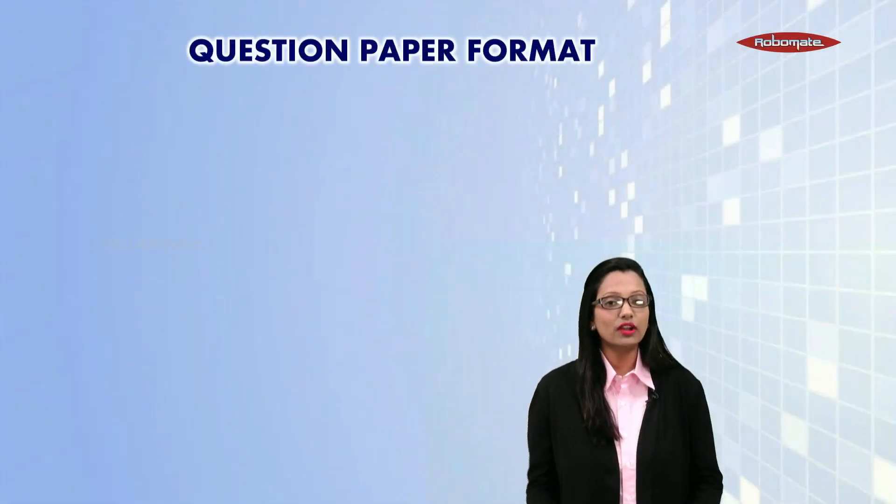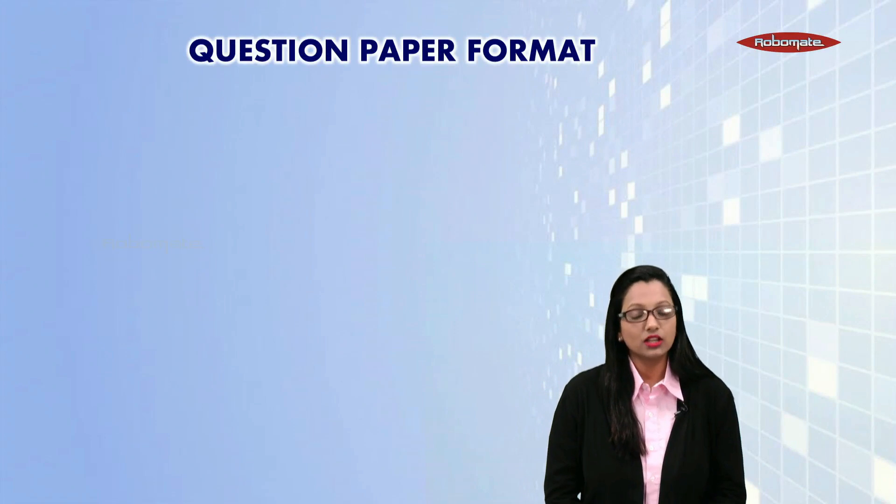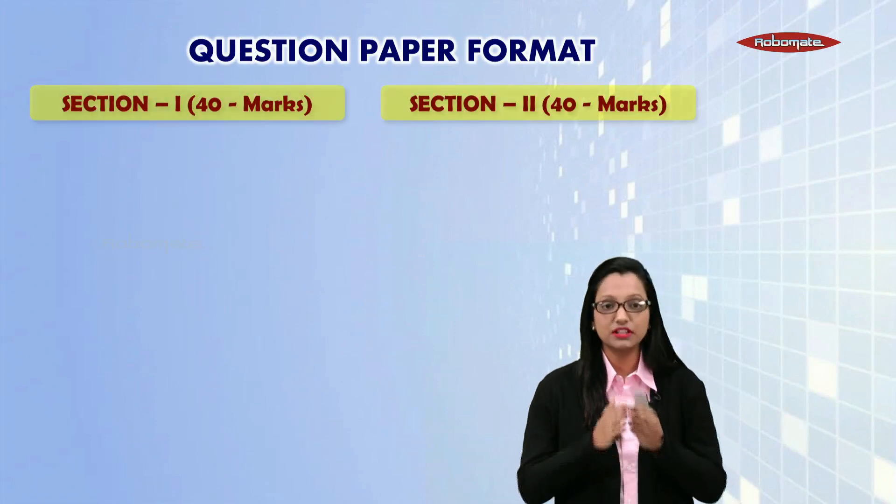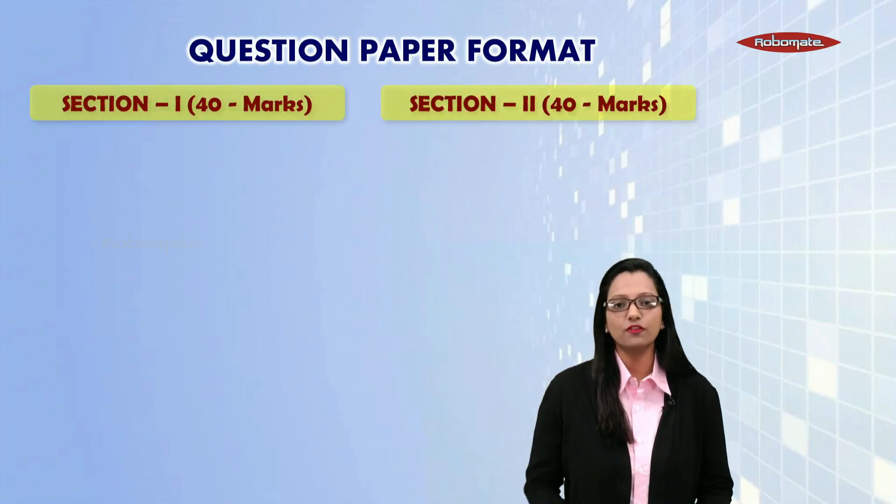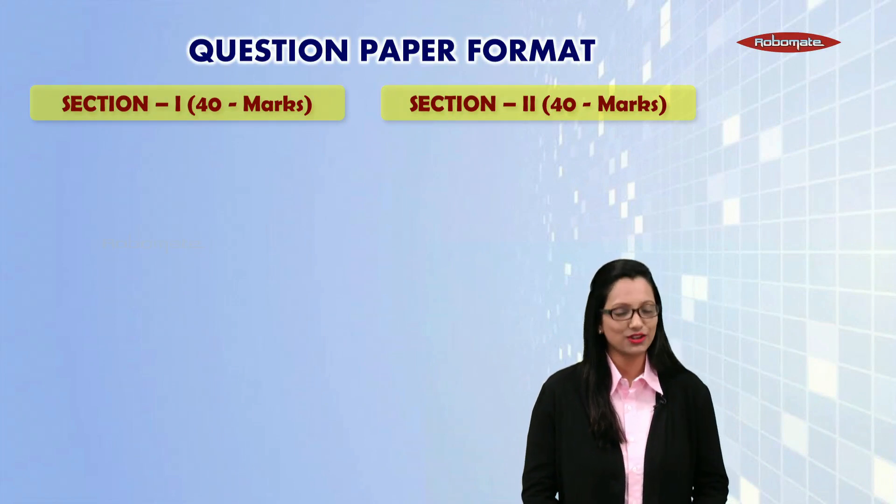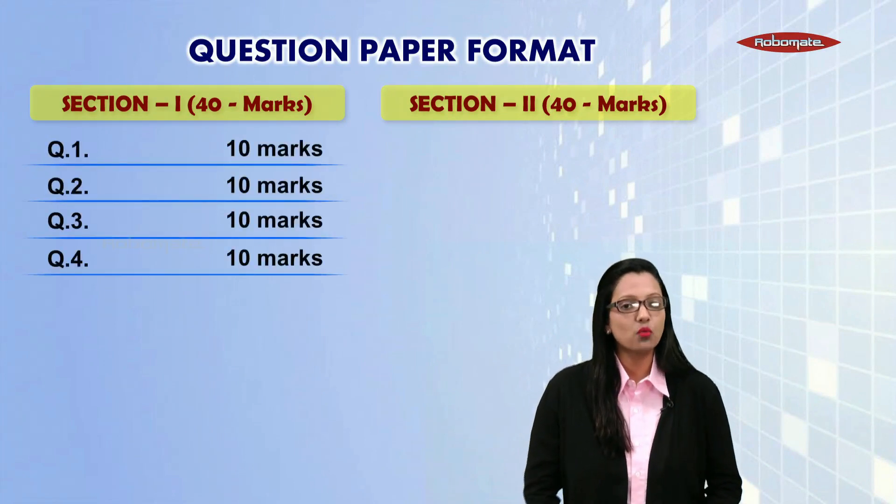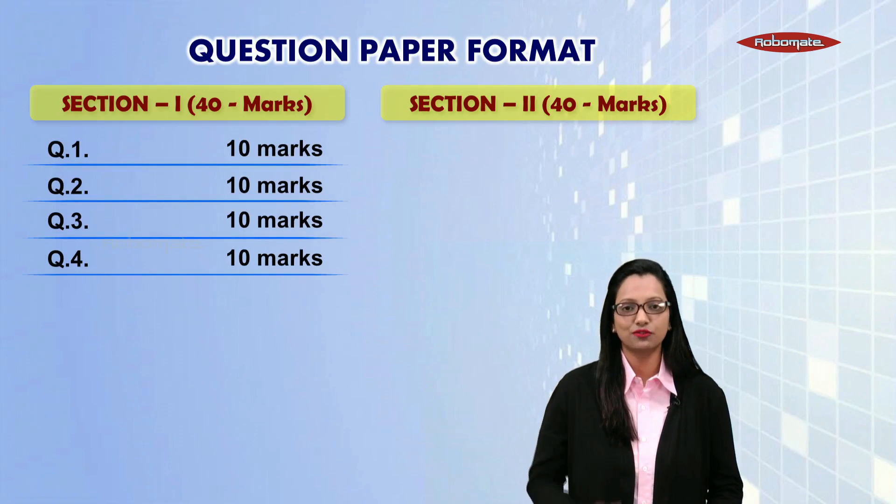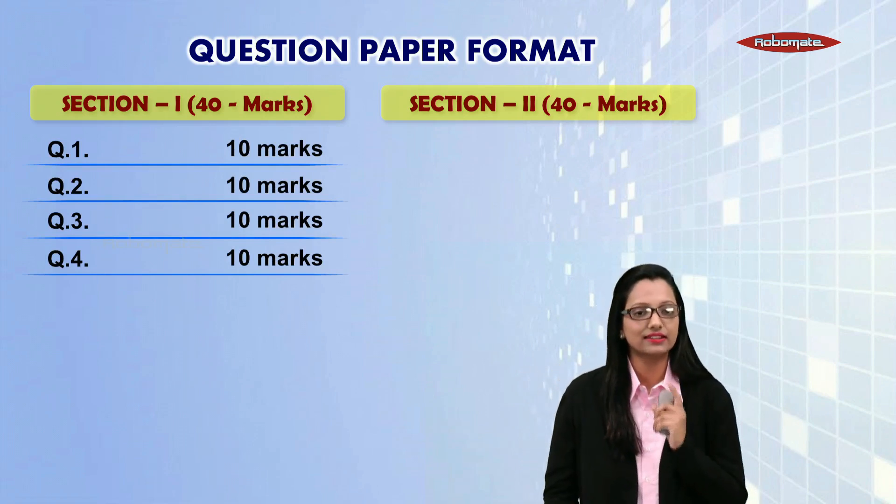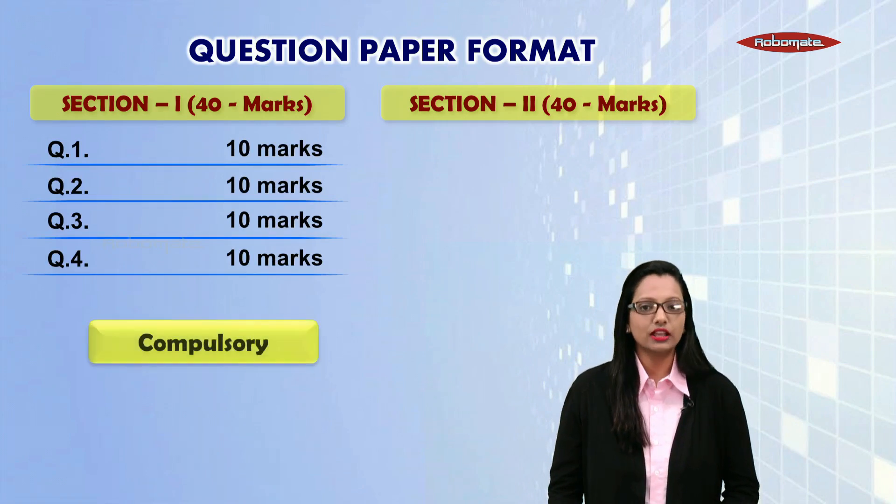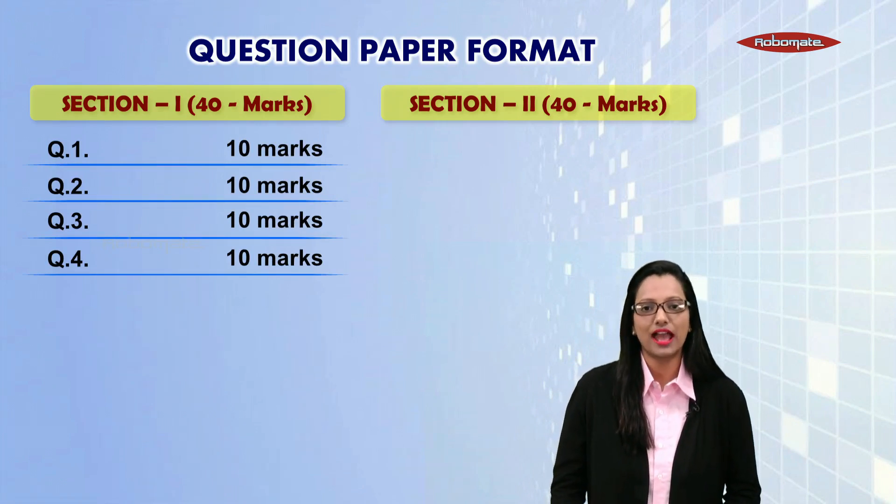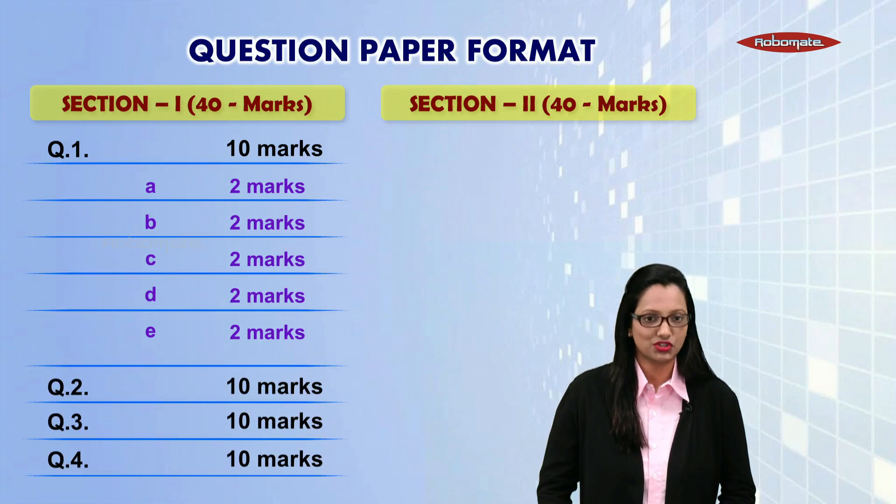Let's quickly have a look at the question paper format. The whole 80-mark question paper has been divided into two sections: Section 1, 40 marks, and Section 2, again of 40 marks. In Section 1, you have four questions, each of 10 marks. One important fact about Section 1 is that it is a compulsory section. Each question in Section 1 has 5 sub-questions which are 2 marks each.